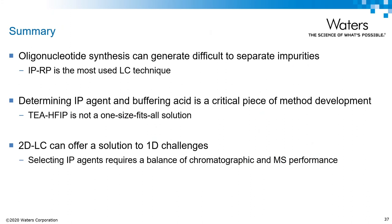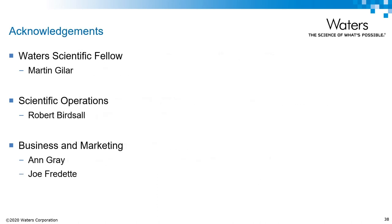To summarize, the oligonucleotide chemical synthesis process can generate impurities that can be difficult to separate due to their similarity to the full-length product. Ion pair reverse phase is the most commonly used technique for separation and purification, where selection of an ion-pairing agent and buffering acid is critical. TEA-HFIP is the gold standard for LC-MS analysis and can be used successfully in many applications, but there are times when you need to consider alternative approaches. From the case study, it was shown that selecting an ion-pairing agent truly is a balance of requiring good chromatographic performance and good MS performance. I would like to thank my colleagues for their many contributions, and I would like to thank you for your kind attention.